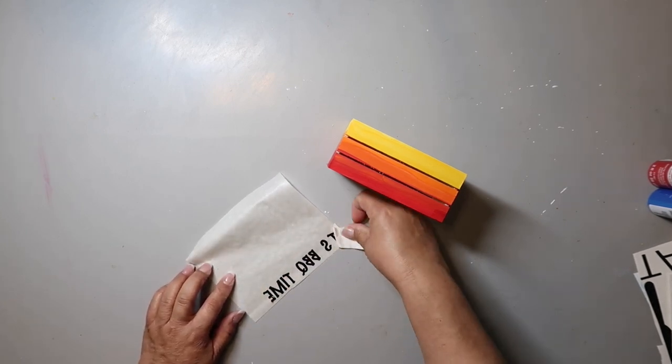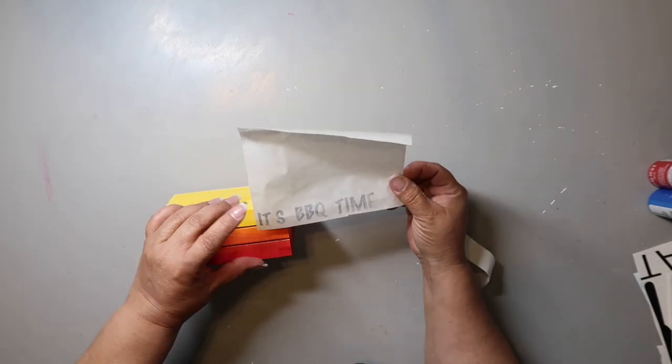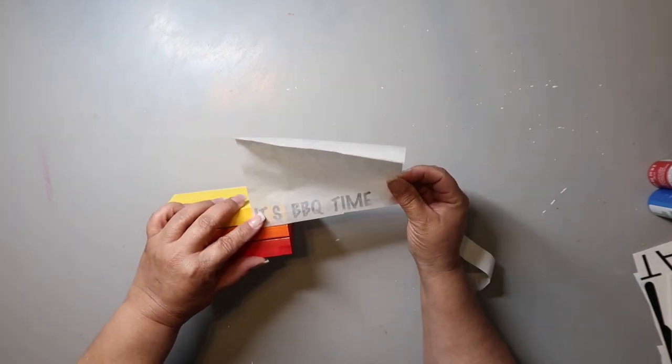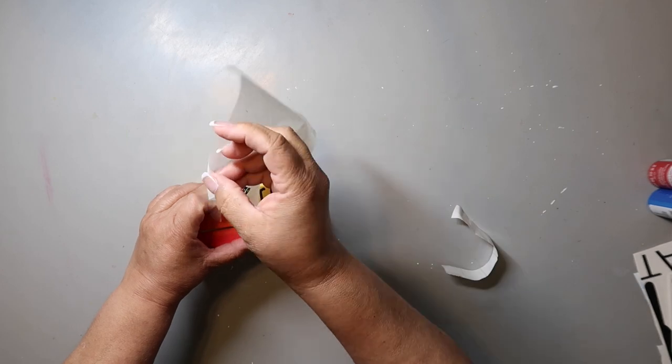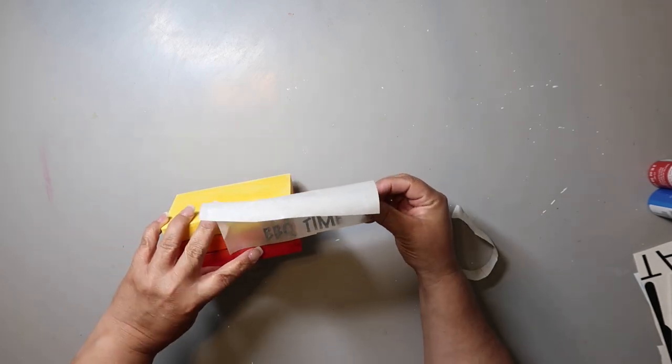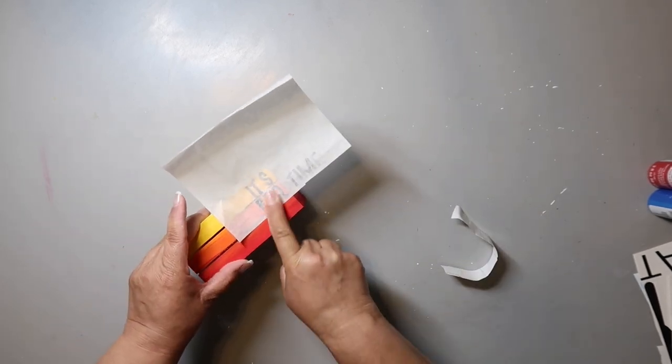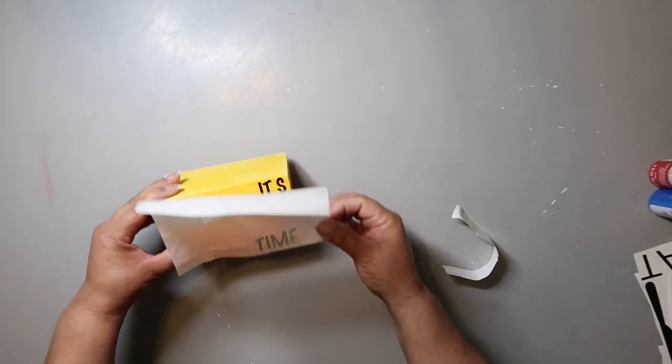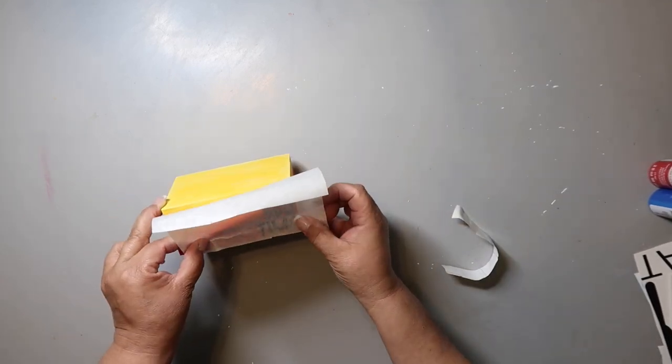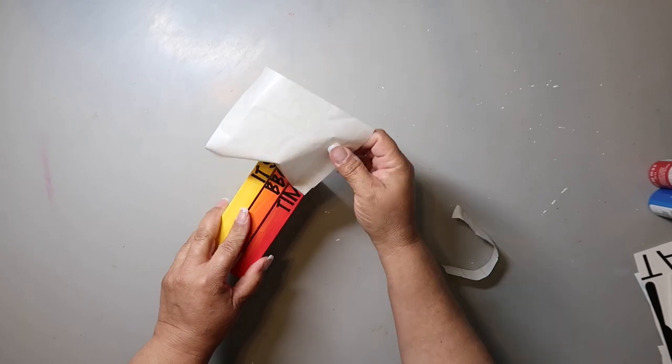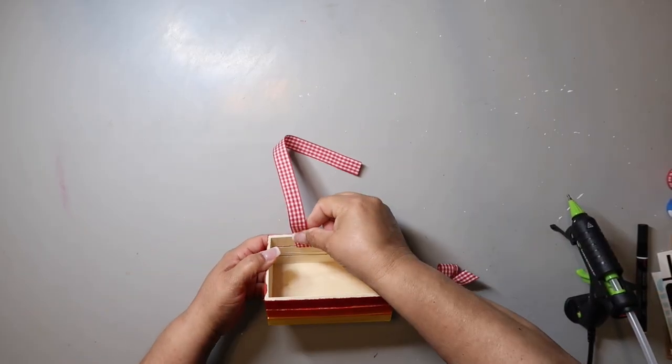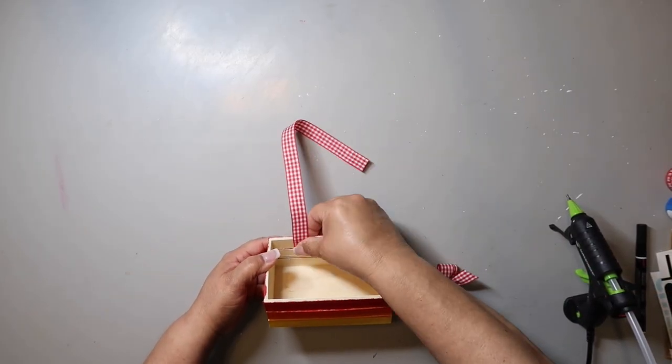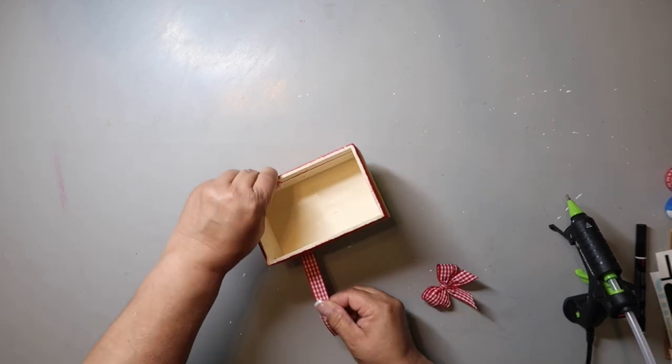Then I use my Cricut to cut out the words 'It's Barbecue Time' and I just added it to the end of the book stack. Now you could totally use stickers or hand letter it, it would turn out just as cute. If you don't have a Cricut, don't let that stop you from creating. Then I'm going to add some gingham check ribbon, some red gingham. It reminds me of like a picnic tablecloth or something.